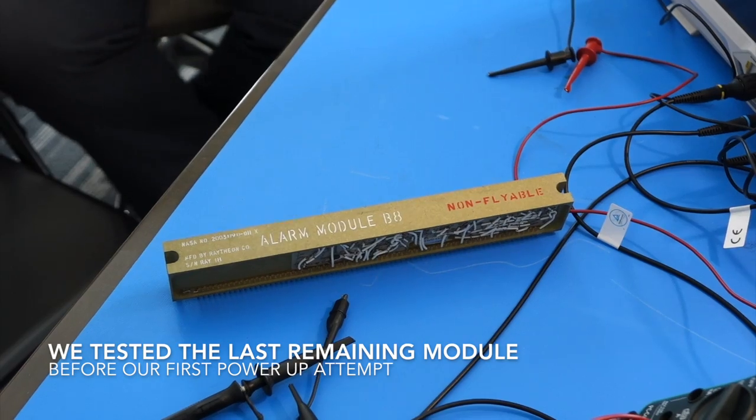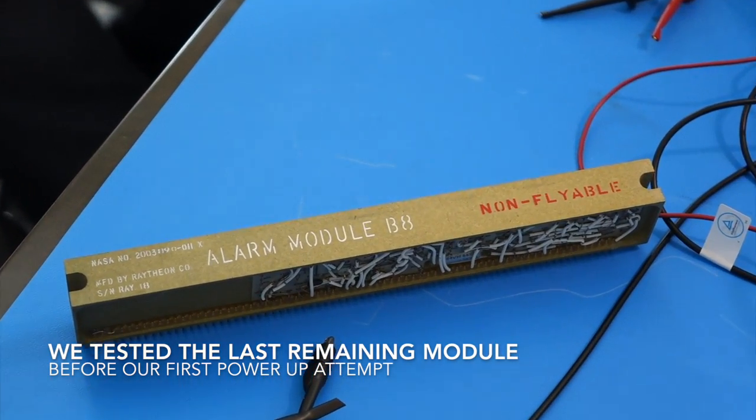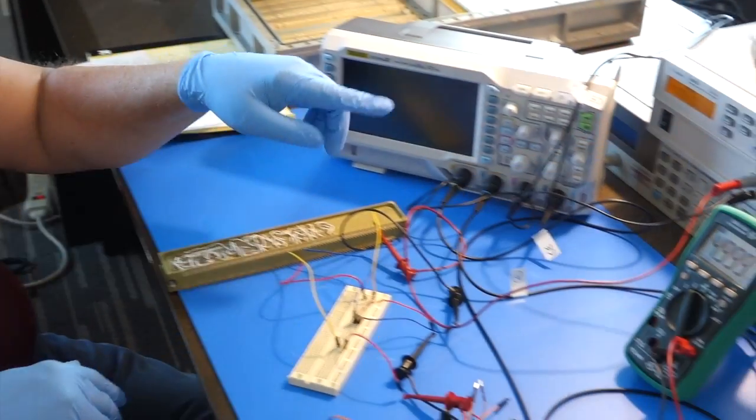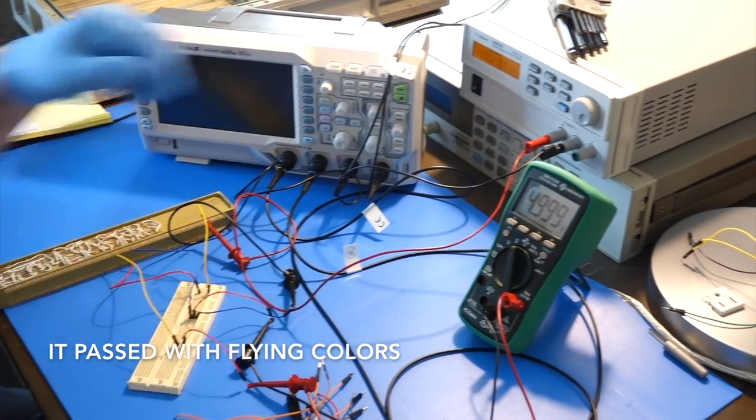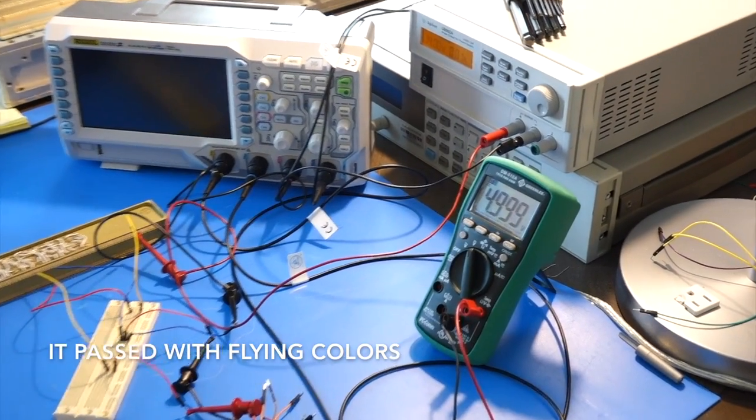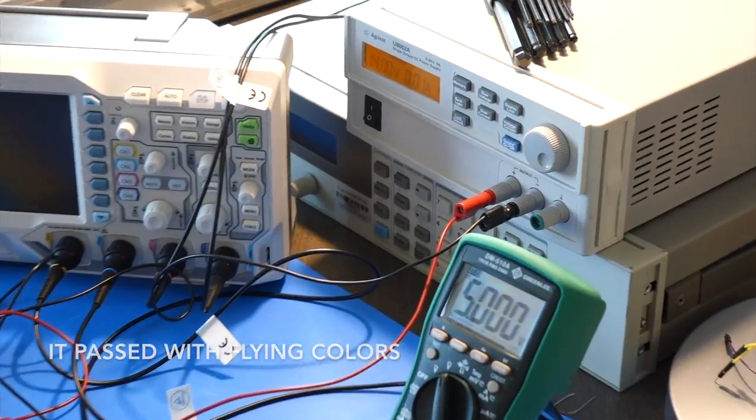The next victim is the alarm module B8. I'm supplying 14 volts to it, it's working and here's the 5 volt. Now it's 5 volt, just sagged down again.